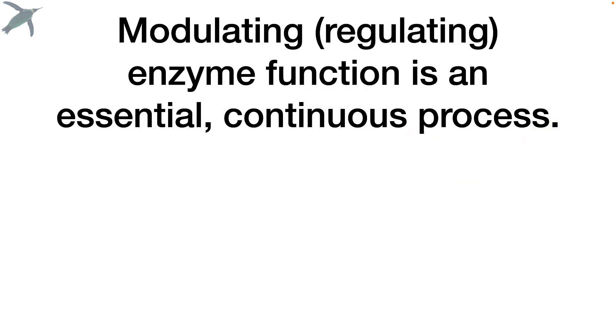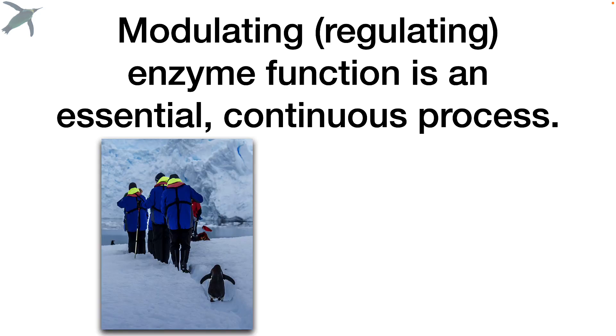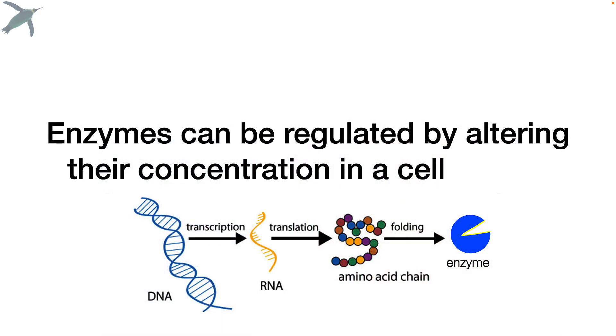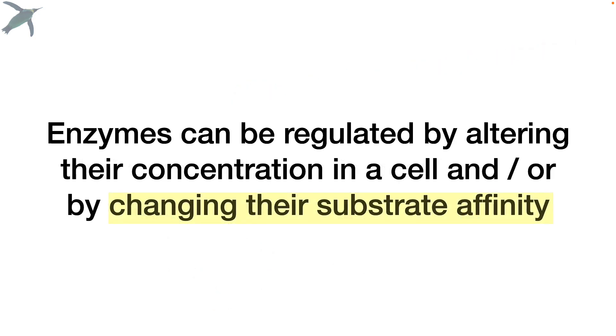Modulating or regulating enzyme function is something that has to happen all the time. Because sometimes you're working in Antarctica, and sometimes you need to digest a green smoothie, right? So the amount of enzyme can be altered. And of course, we make all of our own enzymes. So that can take a while, sometimes seconds to minutes. But if you need a faster response, it's much quicker to change the substrate affinity of an enzyme in order to regulate the rate of reaction. And that can happen really fast.